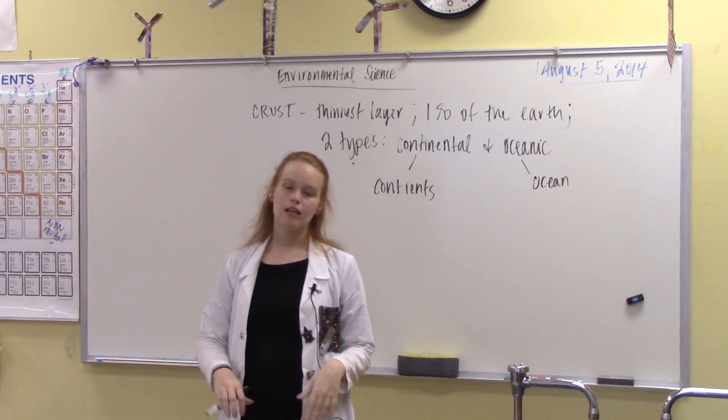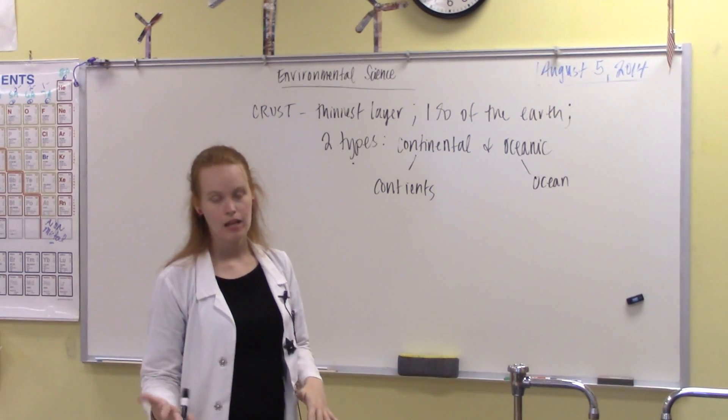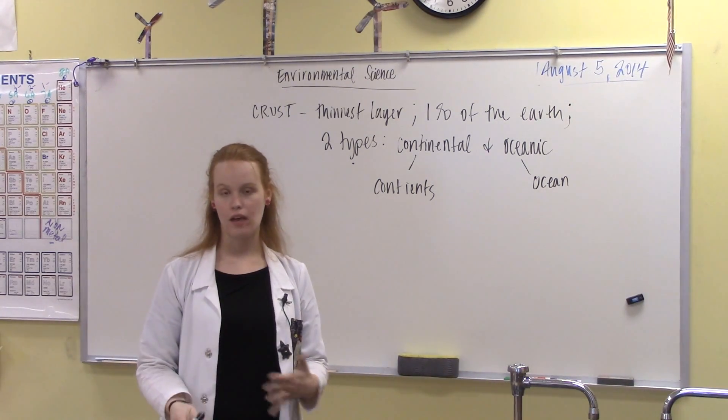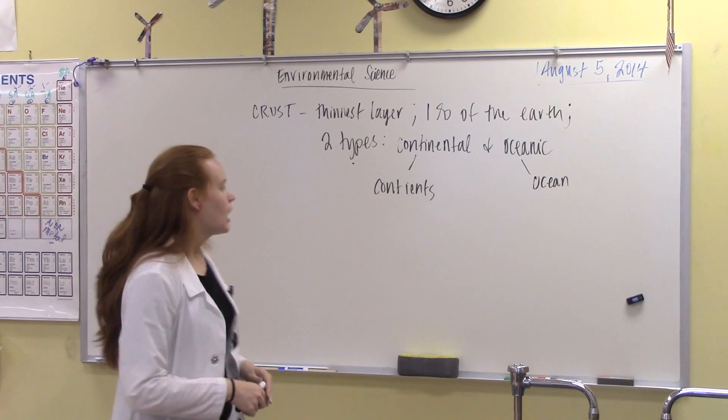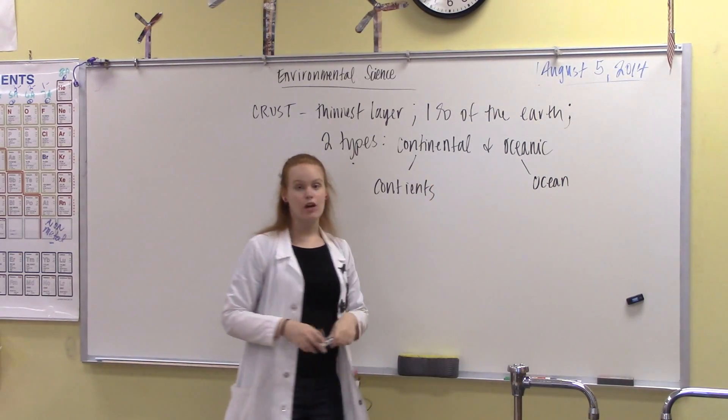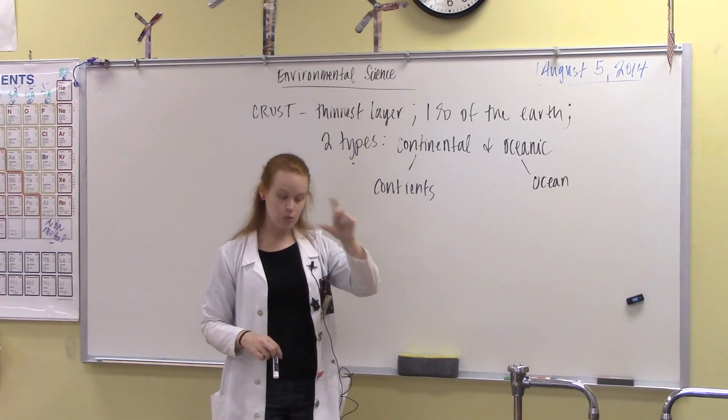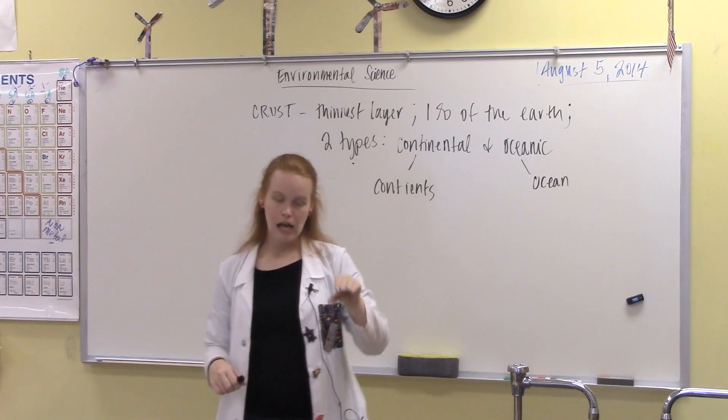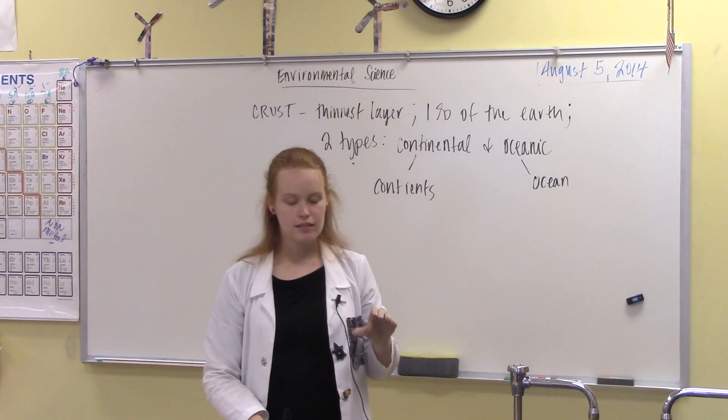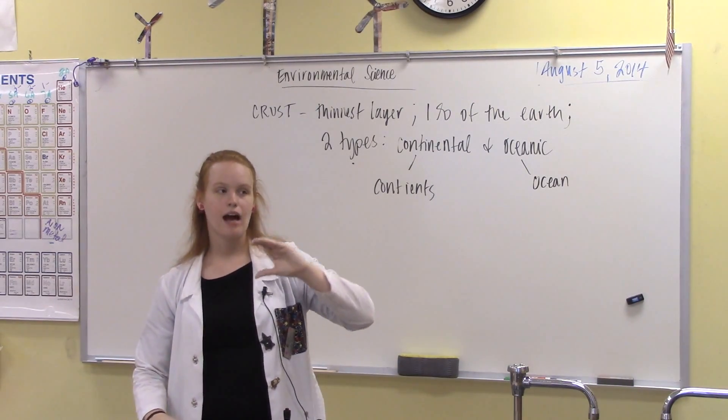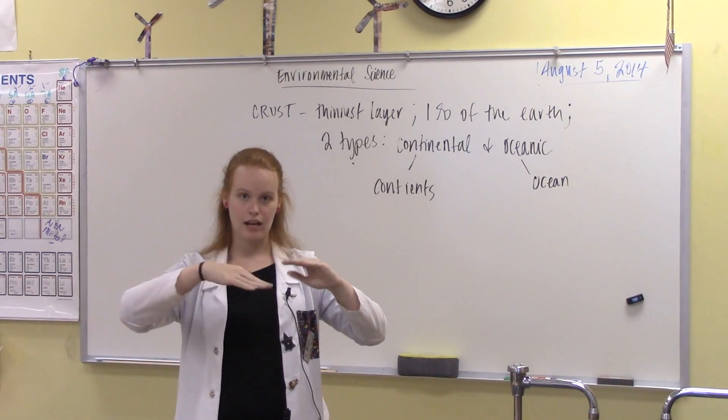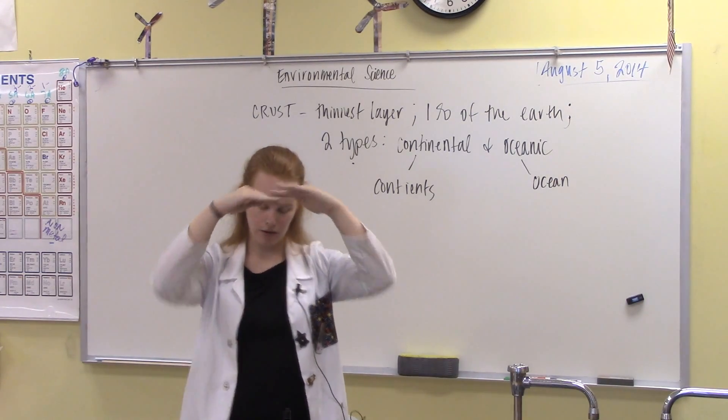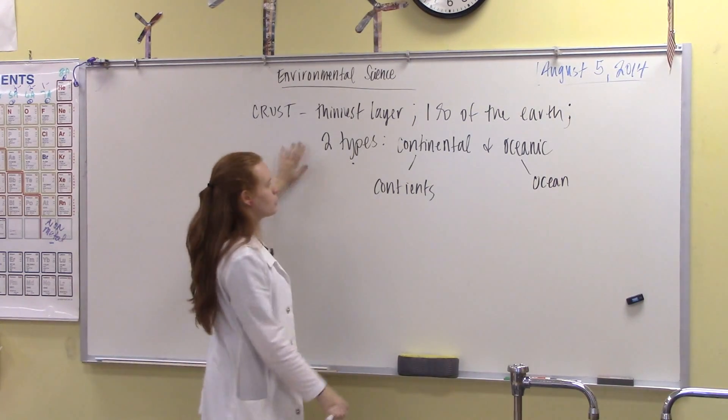So, we have continental and oceanic crust. That's very important. Now, one of these is more dense than the other. When I say dense, I mean one is heavier than the other. Now, it would make sense that continental crust is thicker. This is the thicker crust because there is more of it. The oceanic crust is going to be thinner than the continental crust. However, continental crust does not have a higher density than the oceanic.